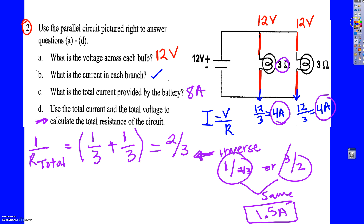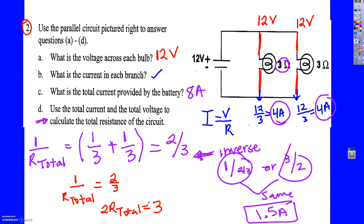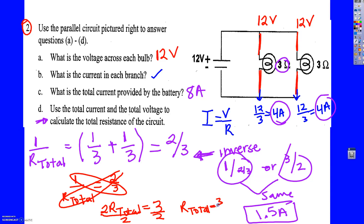The other way I could have solved it: I could have said 1 over R total is equal to 2/3, and cross-multiplying gives 2 R total equals 3. Then divide each side by 2, and R total is 3 over 2, which is 1.5. So those are two different ways you can solve it. Usually I just take the inverse because it's the easiest.